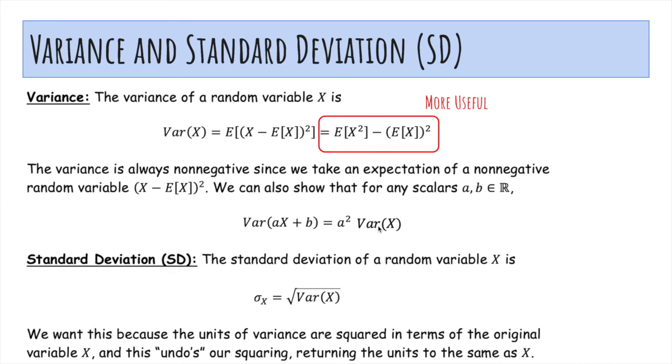The standard deviation of a random variable is the square root of the variance. And we want this because the units of variance are squared in terms of the original because we're squaring the deviations. And so to get it back into the original units, we want to take the square root.